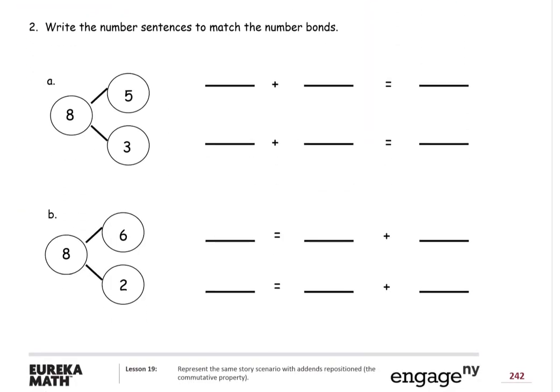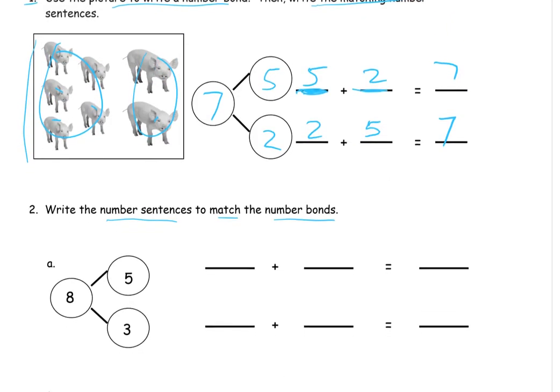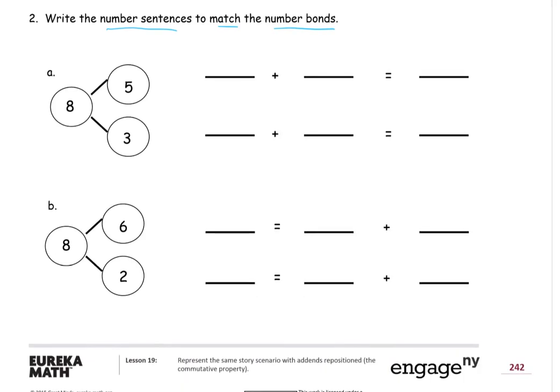Now we'll go on to number two. Write the number sentences to match the number bonds. So this is a lot like the one up above, except now we don't have a picture to count. We just have numbers. And the number bond is already done for us. So we have a total of eight. And we're adding, these are our addends, five and three. Those are our parts, five and three. And our whole is the eight. So we have five plus three equals eight. And we just change the order of the addends and do the three first and then the five. It's still eight.